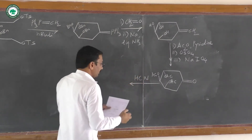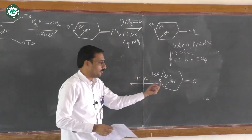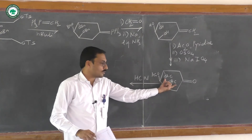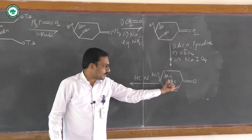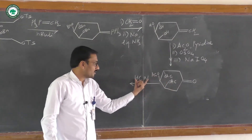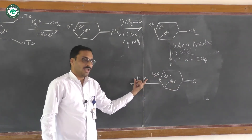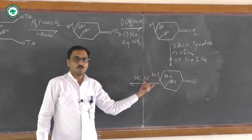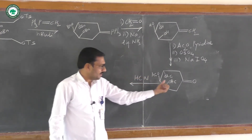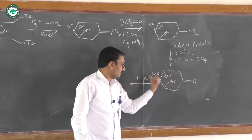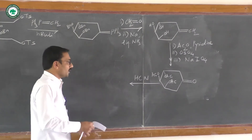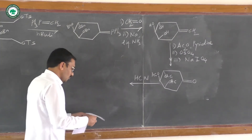This cyclohexane-type ketone compound is then allowed to react with hydrogen cyanide (HCN). This is the well-known reaction between a ketone and HCN, resulting in the formation of the corresponding cyanohydrin derivative.